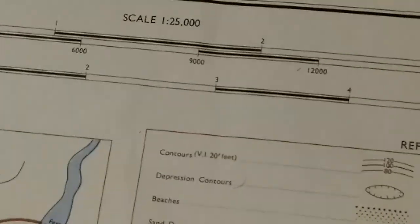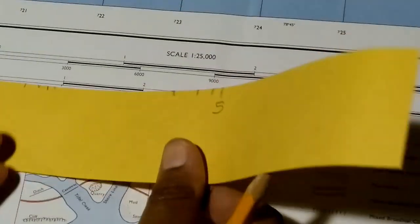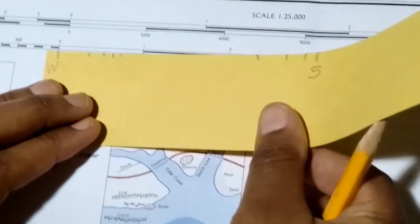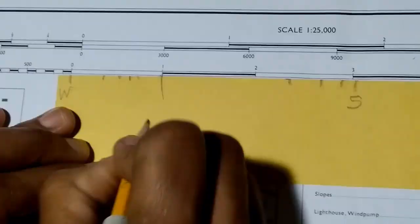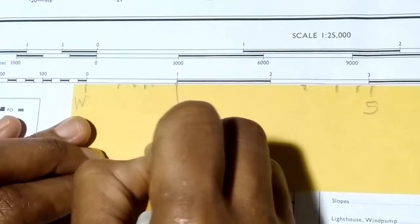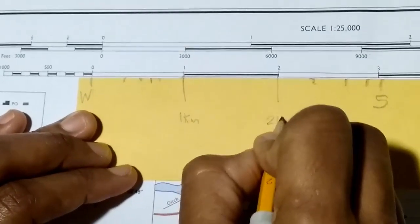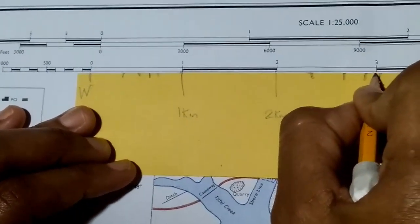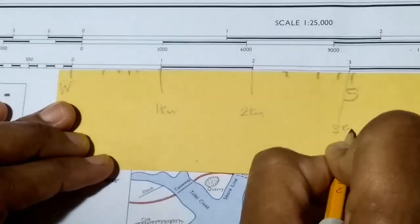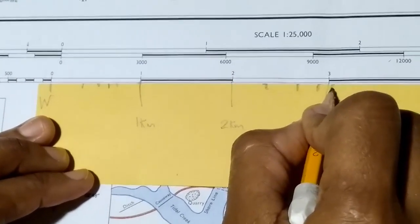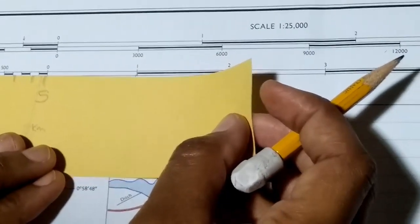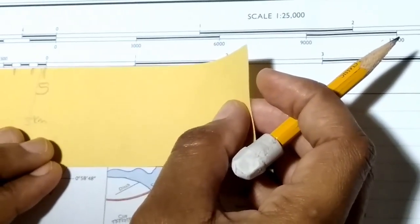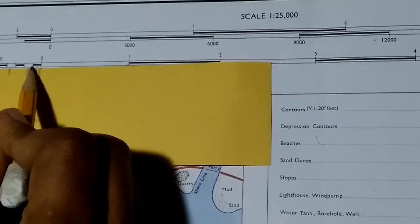Once we're at the scale, start at point zero — I'll align the W at zero and mark off the kilometers: one kilometer, two kilometers, and basically three kilometers. There's a little space left but it's very insignificant, so the total distance is three kilometers.